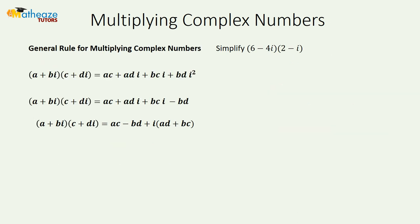Now let's look at the general rule for finding the product of two complex numbers. Using the FOIL method and simplifying, we get: (a + bi)(c + di) = (ac minus bd) plus (ad plus bc)i.